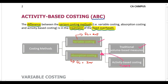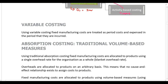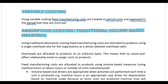Before we look at activity-based costing in more detail, let's first recap variable costing and traditional absorption costing. With variable costing, our fixed manufacturing costs are treated as period costs — they are not included in inventory valuation, but instead they are expensed in the period that they are incurred. With traditional absorption costing, our fixed manufacturing costs are allocated to products and included in inventory valuation.